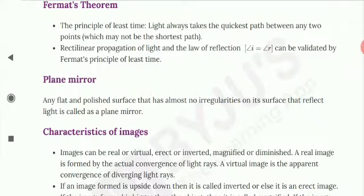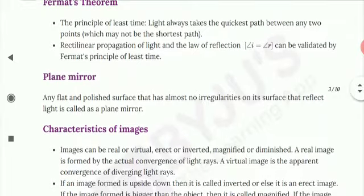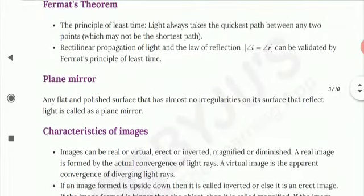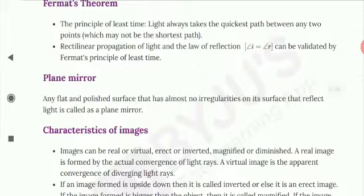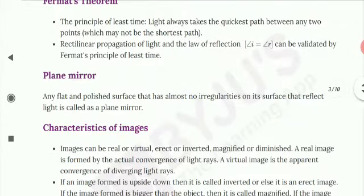Light always propagates in rectilinear motion. You have learned about rectilinear motion in class 6, and the laws of reflection are followed by it. The angle of incidence is always equal to the angle of reflection, and this can be validated by Fermat's principle of least time.